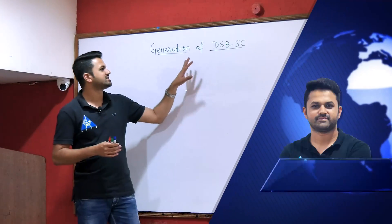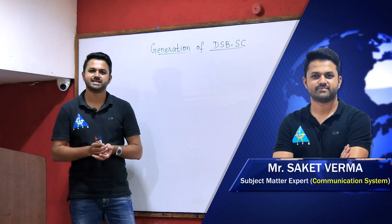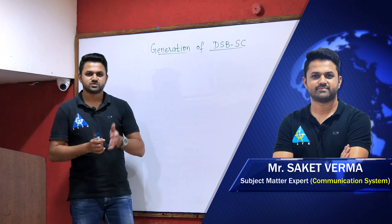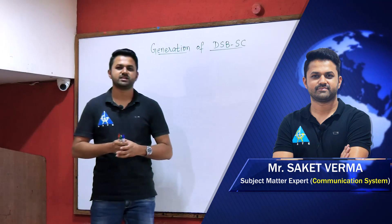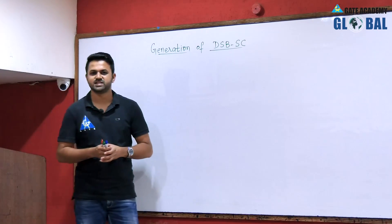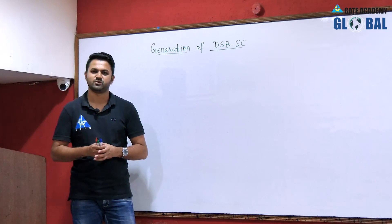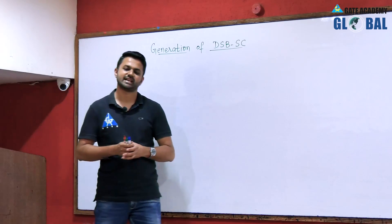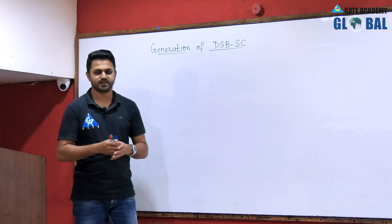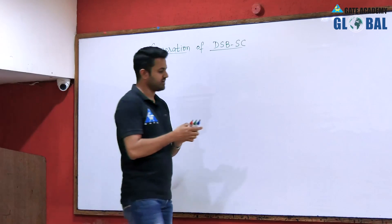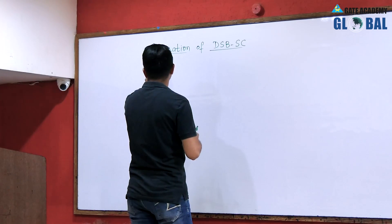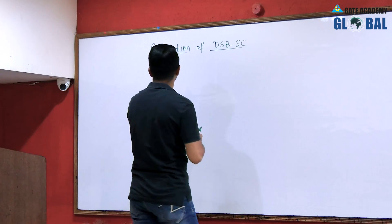Our next topic is generation of double sideband suppressed carrier. There are two methods to generate double sideband suppressed carrier. The first one is known as the balanced modulator and the second is known as the ring modulator. We will see each method in detail one by one.